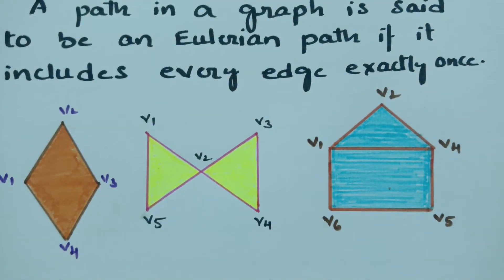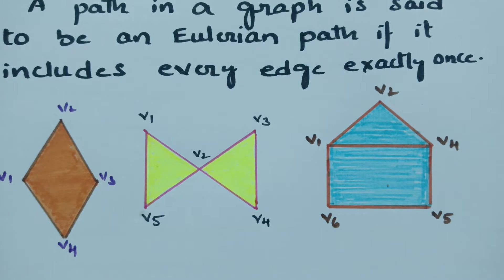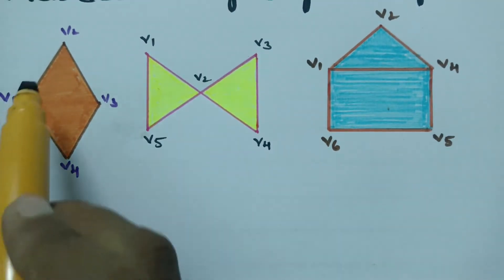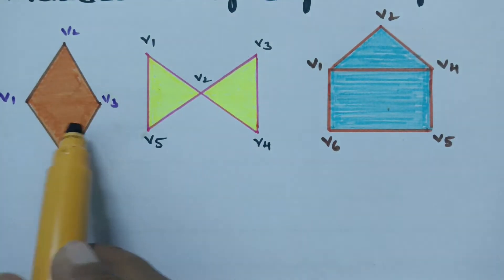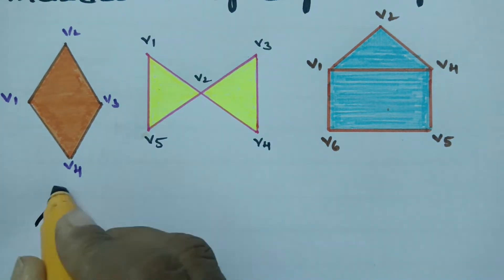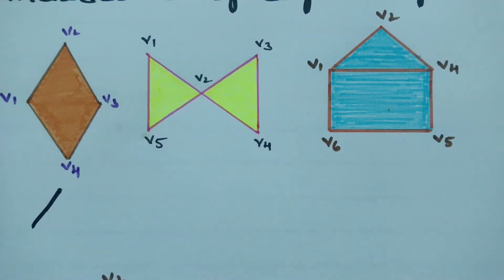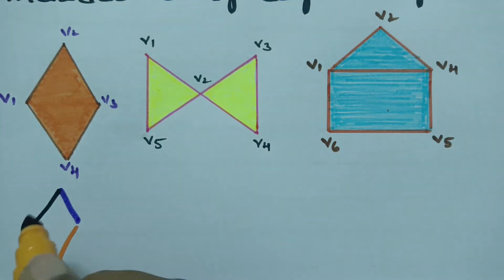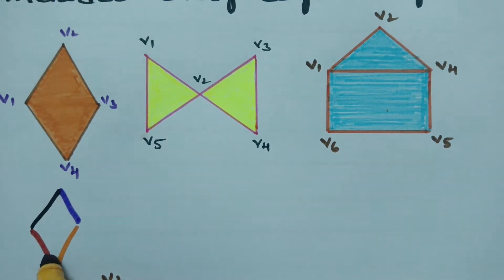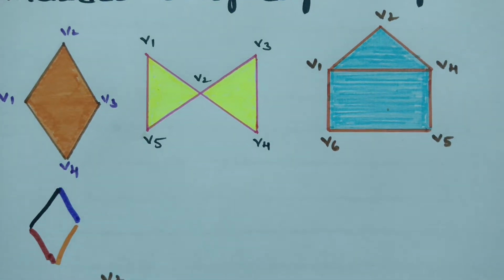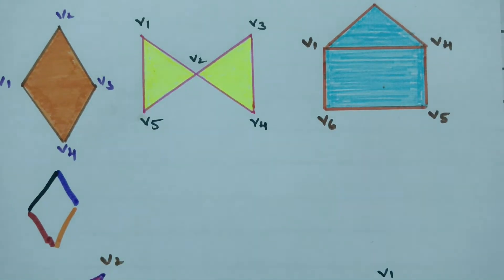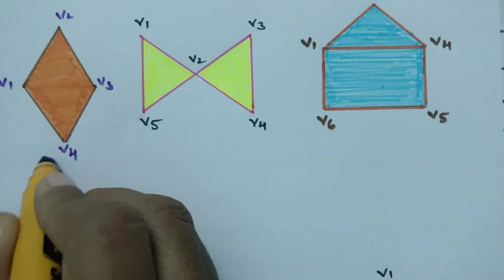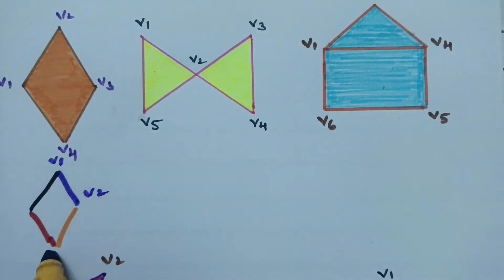Let's look at some examples. Here we have a graph with four edges — one, two, three and four. We have to cross each and every edge only once. This is edge one, two, three and four. Is there any repetition? No, there is no repetition. Therefore we can say that the given graph has an Eulerian path.